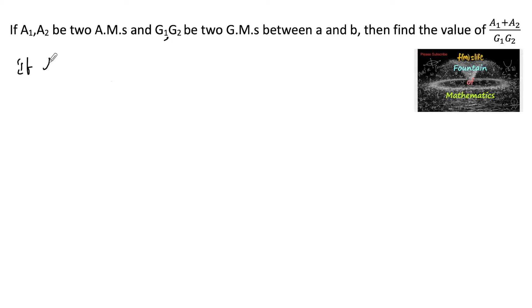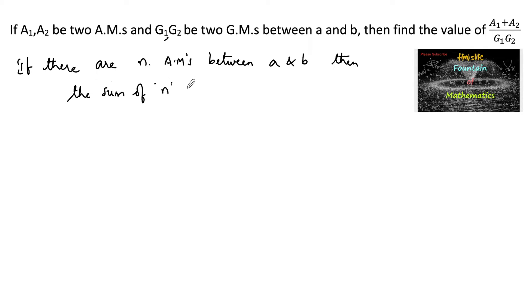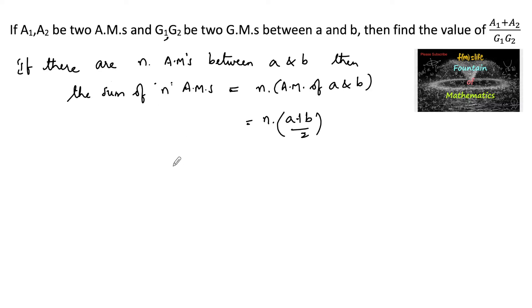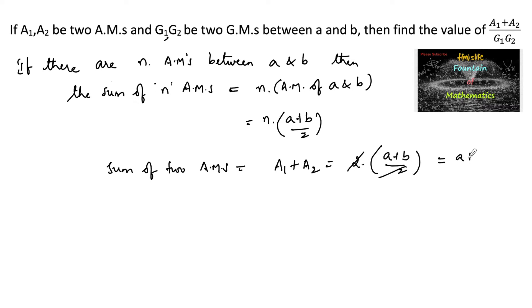We know that if there are n arithmetic means between a and b, then the sum of n arithmetic means is equal to n times the arithmetic mean of the first and last number, that is n times (a + b)/2. So here, there are two arithmetic means, therefore their sum a1 + a2 equals 2 × (a + b)/2, which gives us a1 + a2 = a + b.